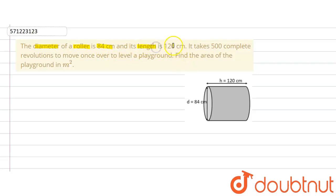And its length, meaning the height of the cylinder, is 120 cm. It takes 500 complete revolutions to move once over to level a playground. Find the area of the playground in meter square.